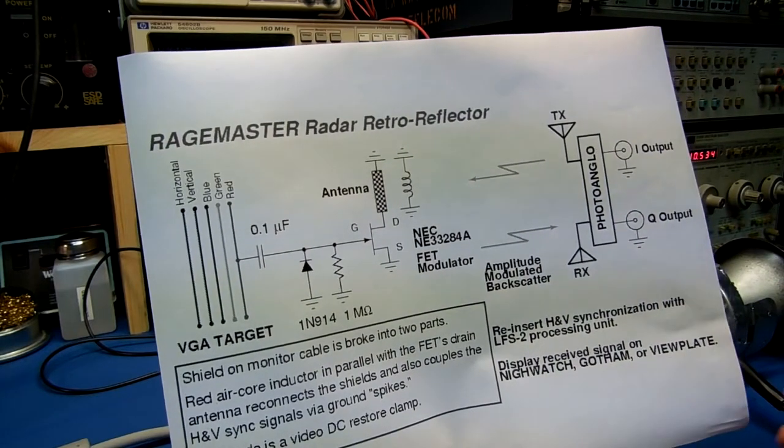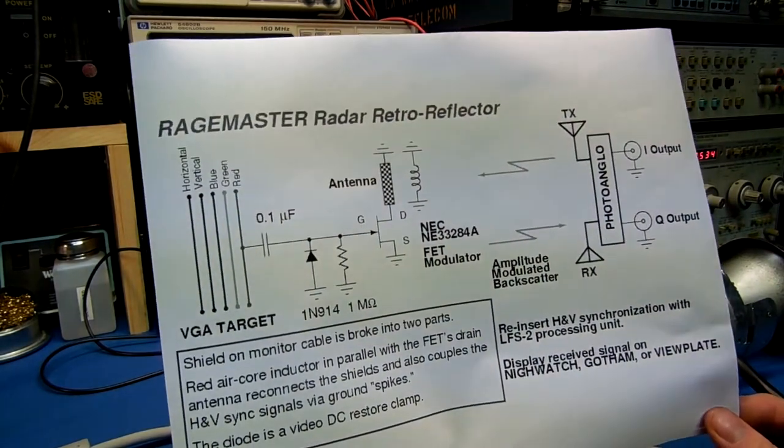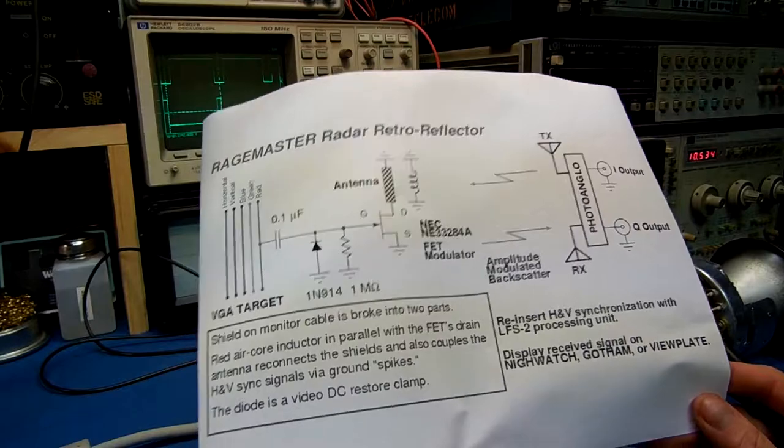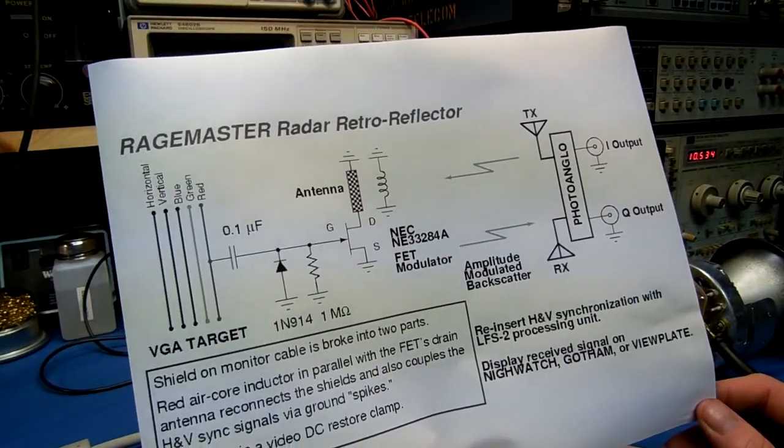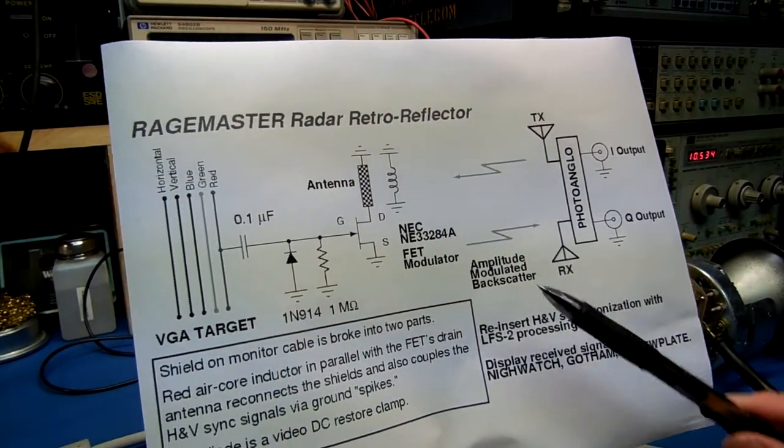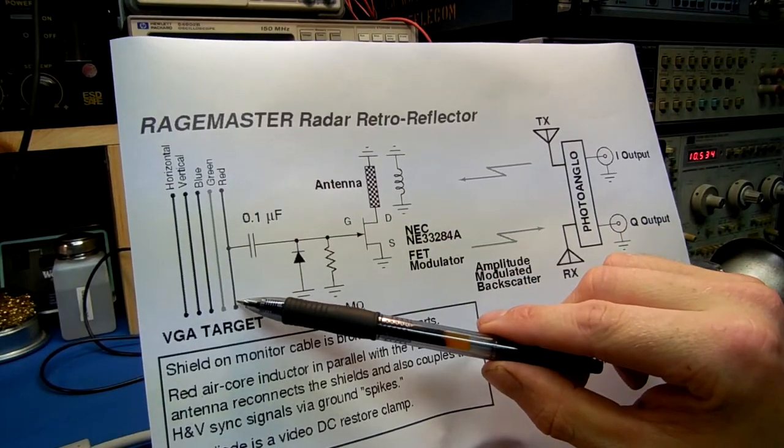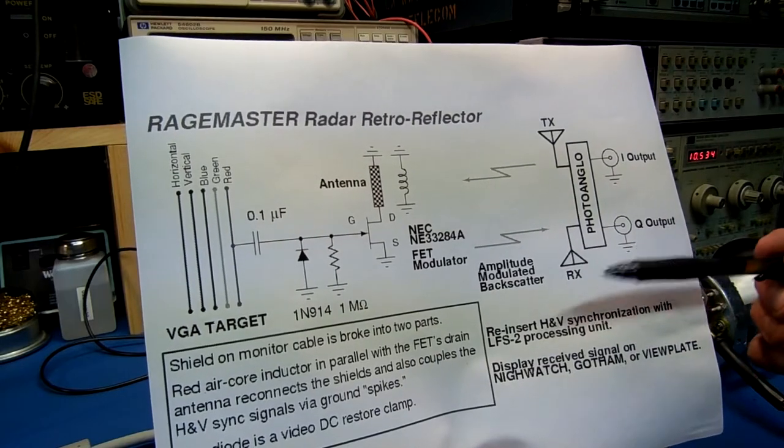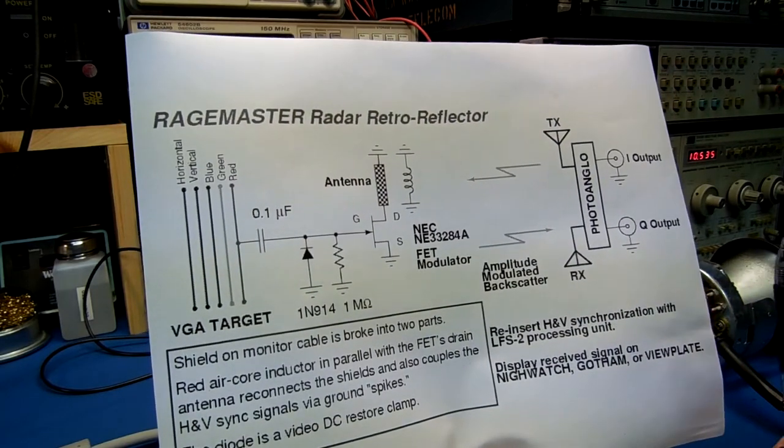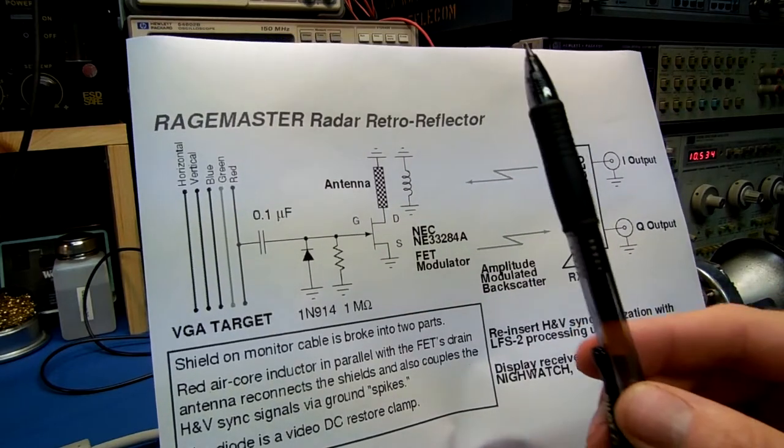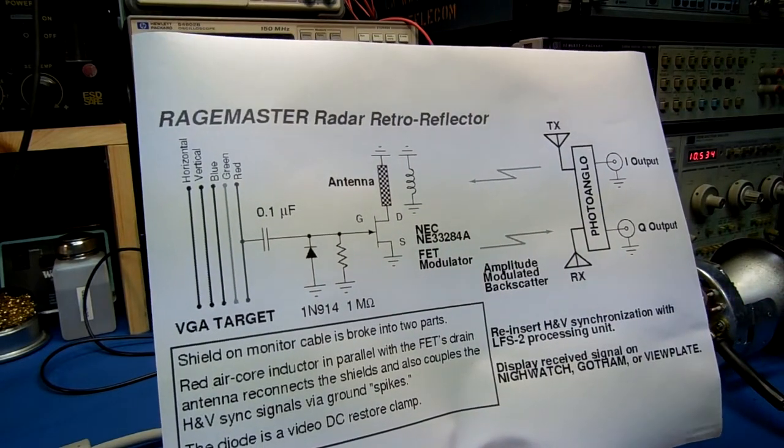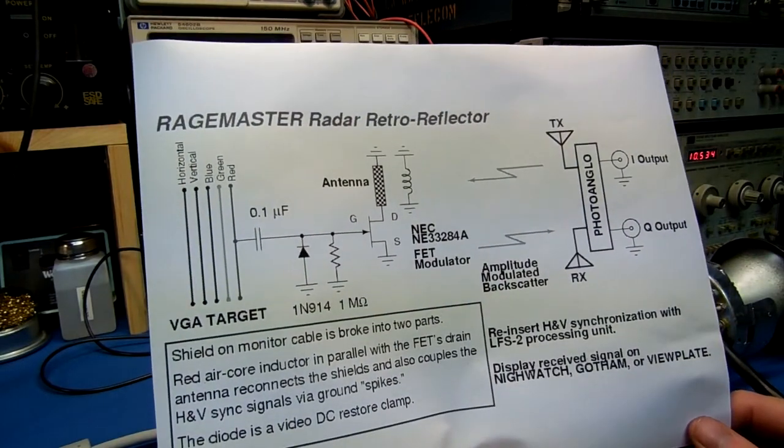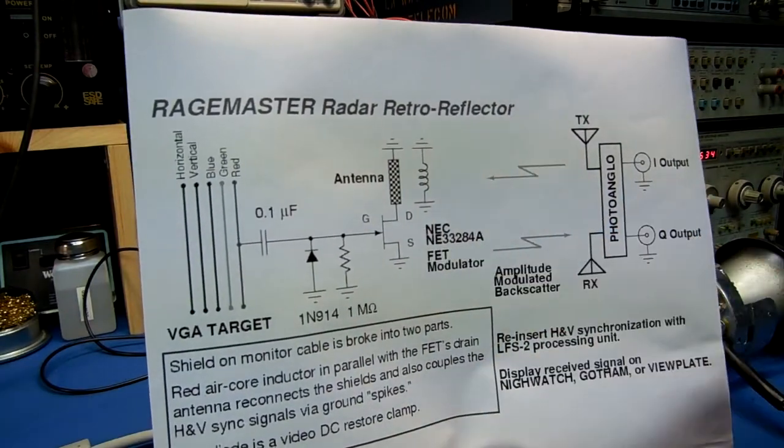The actual processing of the received signal is a little more complex than other things. You need to essentially view the targeted monitor's sync frequencies. Then you need to generate them yourself in the signal processing unit. Otherwise, when you display the signal on your monitor, it will roll across the screen instead of being stable. Ideally, you'd phase lock the sync frequencies once you find them to the exact targeted monitor's specifications.